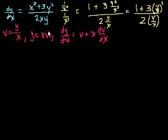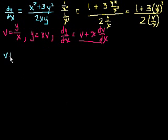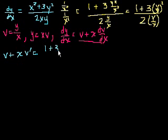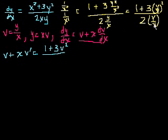Now we can substitute. The derivative of y with respect to x is just this, and then the right-hand side we can substitute v for y over x. So we get v plus x times v prime is equal to 1 plus 3v squared, all of that over 2v.